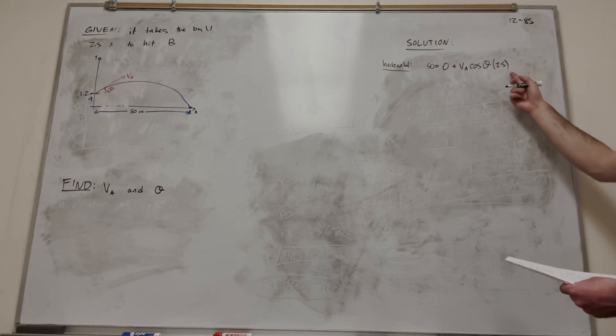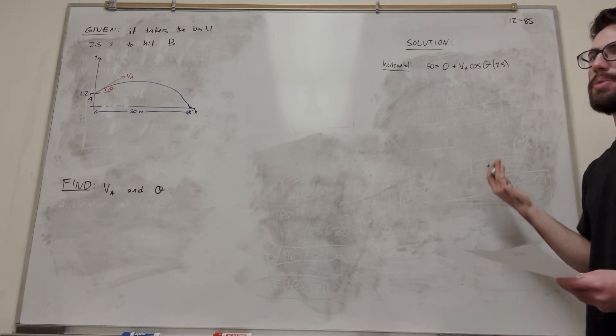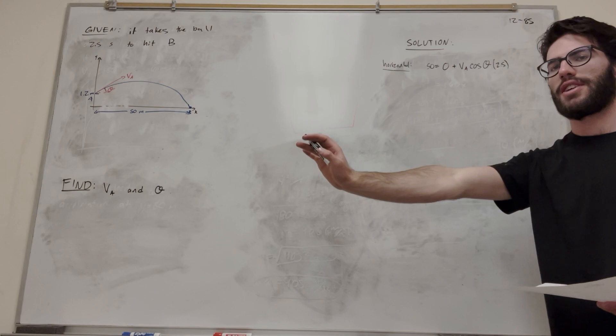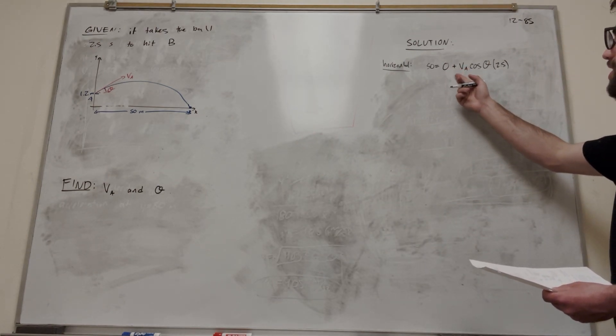So then we're going to multiply it by one-half acceleration times squared. But because we're in the x-direction, there's no acceleration, right? The ball is traveling at the consistent velocity in the x-direction. So this is the equation we have.